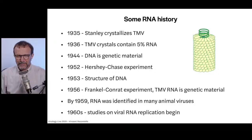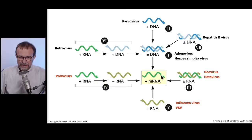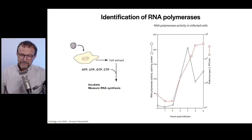Today we'll talk about RNA reproduction. People wanted to know what was copying this RNA, because cells didn't seem able to copy RNA. Using our Baltimore scheme with mRNA at the middle, we're going to talk about viruses with RNA genomes and how they reproduce their RNA — reoviruses with double-stranded RNA, influenza and VSV with negative-stranded RNA, and poliovirus with plus RNA. We will not talk about retroviruses, which have plus RNA — they get their own lecture.